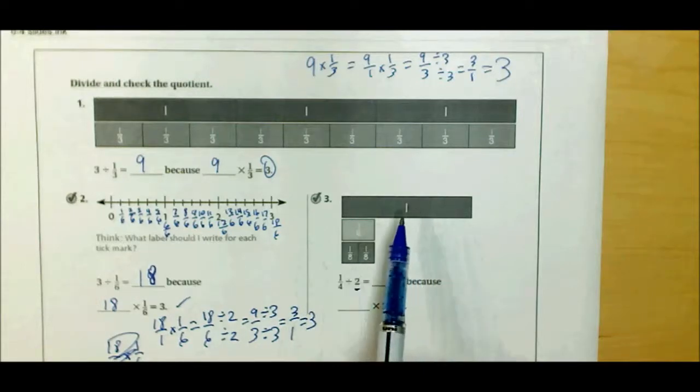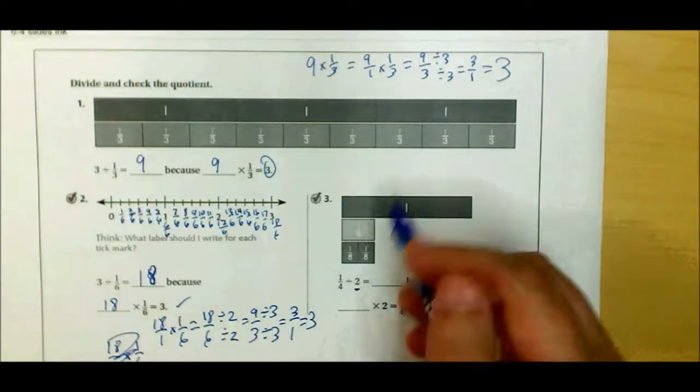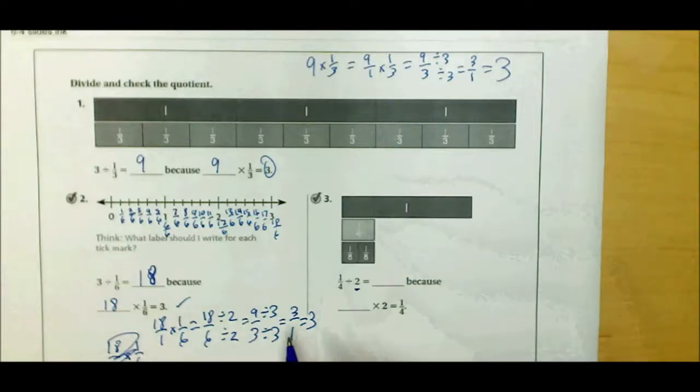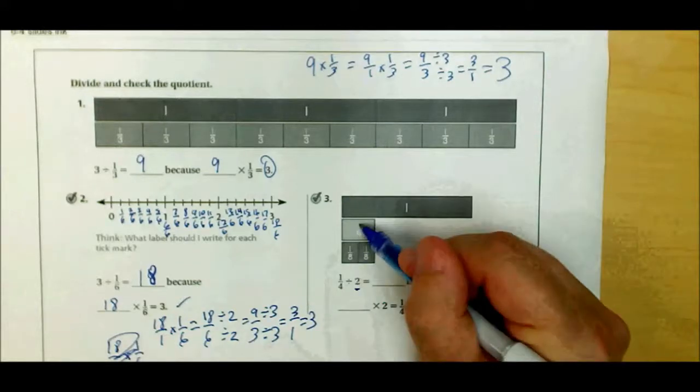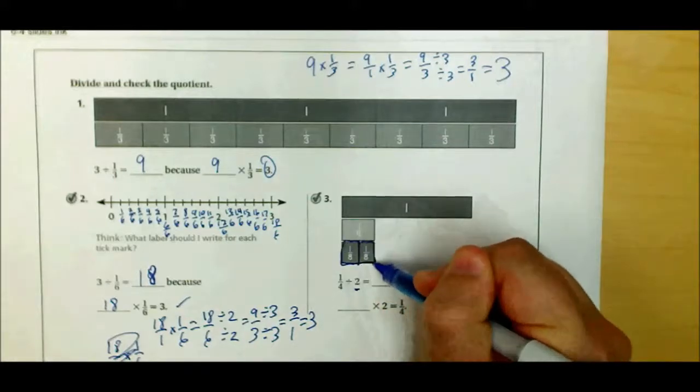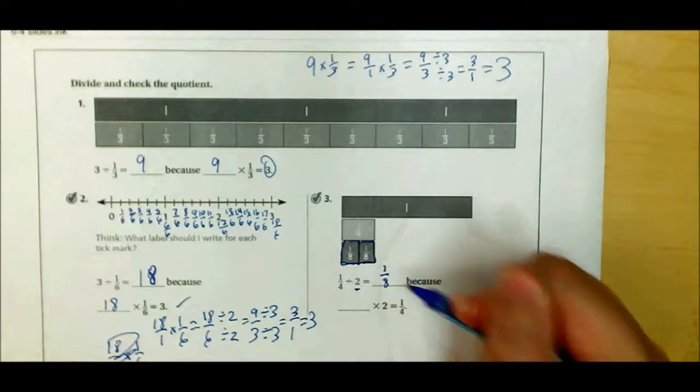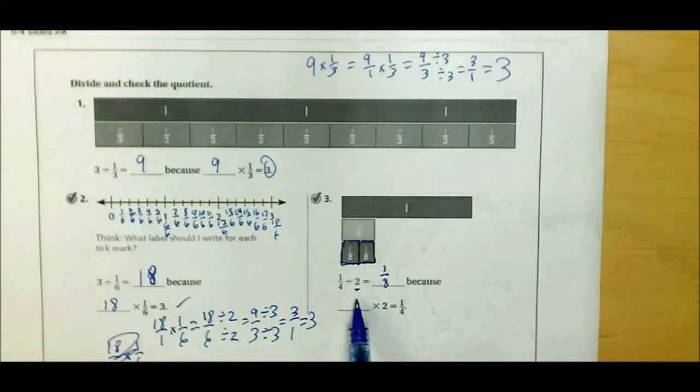You can find this using fraction strips, but on the homework, they do the fraction strips for you. So you don't have to figure out what these are down here. But this models it very well. This is my 1 fourth of a banana bread right here. 1 fourth of a loaf of banana bread. And if I cut that in half, each piece is going to be 1 eighth of a loaf. So each of my two people who are sharing my 1 fourth of a loaf of banana bread are going to get 1 eighth of a loaf.